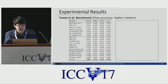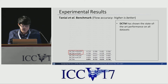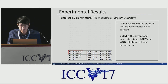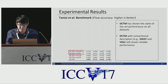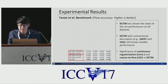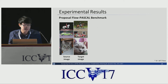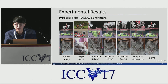In quantitative evaluation, our DCTM achieves state-of-the-art performance on our databases. In the evaluation, DCTM with conventional descriptors such as DAISY and VGG network features still shows reliable performance. We also show the significant contribution of the continuous regularization and coarse-to-fine scheme in our DCTM method. On other databases with severe photometric and geometric variation, such as the Proposal Flow Pascal benchmark, our DCTM still shows reliable performance compared to conventional methods.